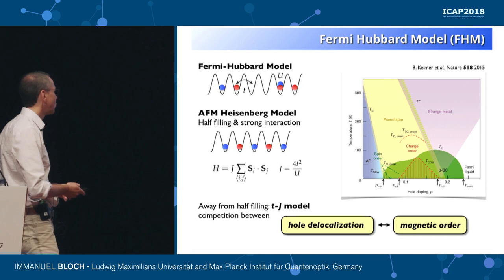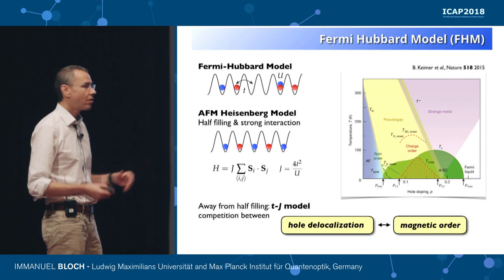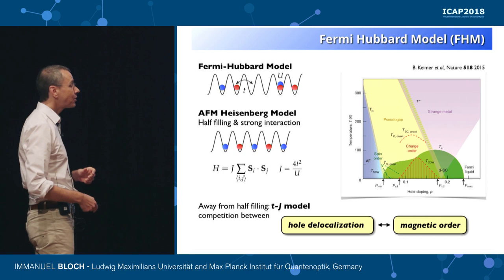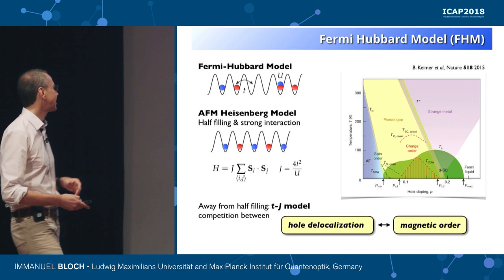You really want to understand what happens when you bring charge or density impurities into the system and how they change the magnetic environment, or what new phases they lead to. A simple model that tries to capture this is the so-called t-J model, where you have hopping of particles in an environment of holes and superexchange leading to antiferromagnetic coupling. My whole talk will be about the competition between antiferromagnetic order and hole delocalization.